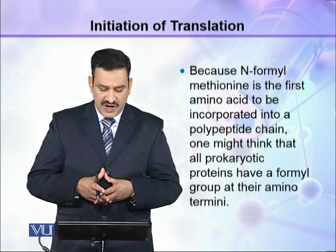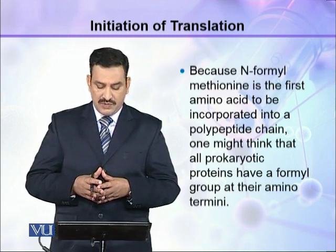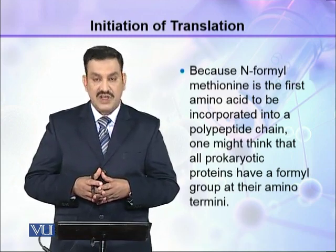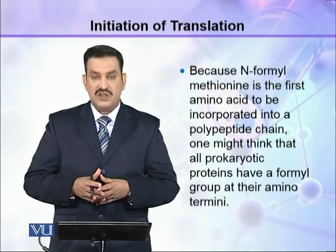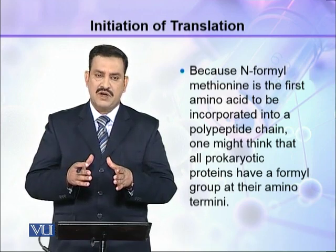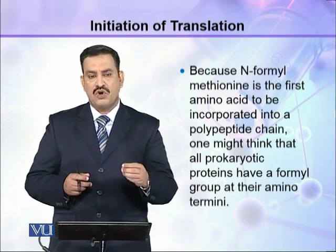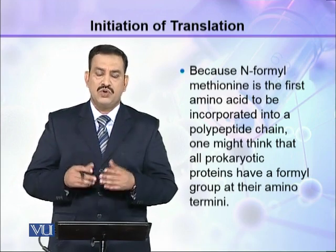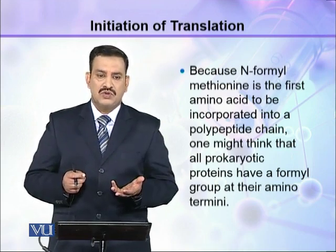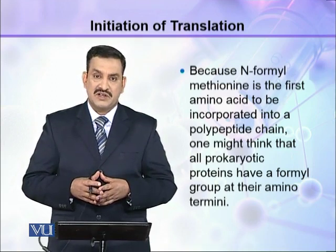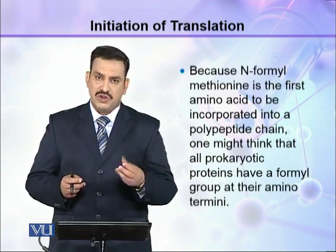Because N-formyl-methionine is the first amino acid to be incorporated into a polypeptide chain, one might think that all prokaryotic proteins have a formyl group at their amino terminus. Since the first codon is always AUG, the first amino acid is always formyl-methionine, so one can easily expect that the first amino acid in all prokaryotic proteins would be formyl-methionine.